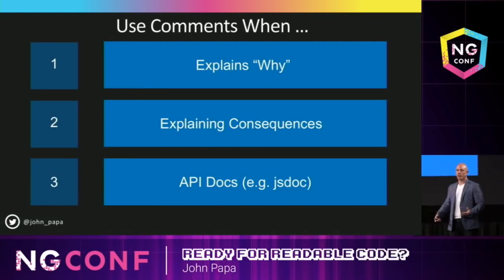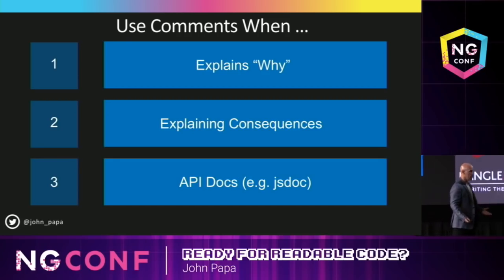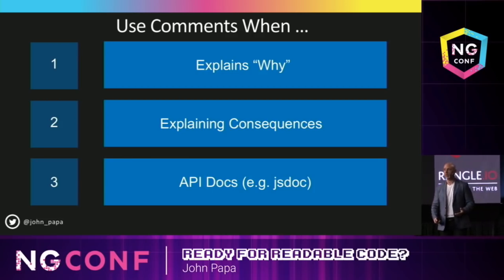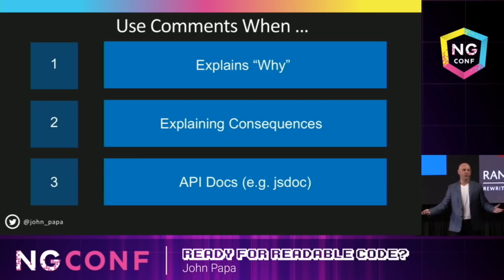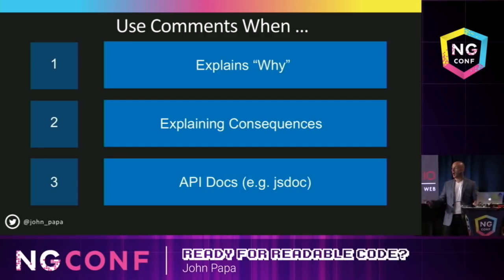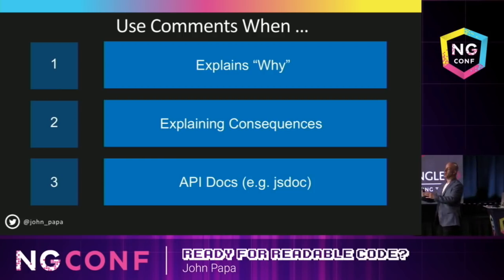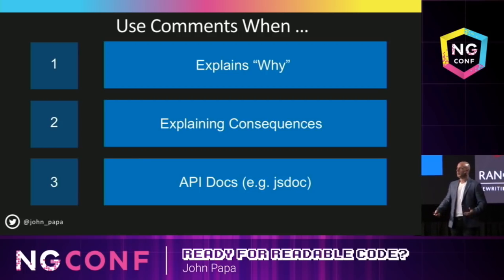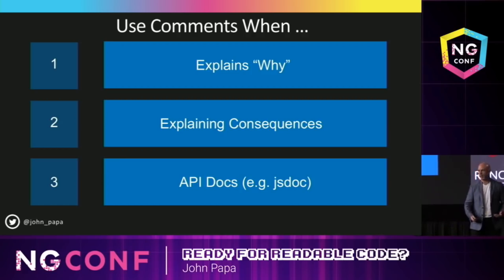So when do you use comments? If it's explaining why something's there, or some kind of unexpected consequence. Or you're doing API docs like with JSDoc — that will clearly help with readable code. There are times to use comments. For example, regex. Who here can actually read a regex that's more than three characters long? You've got a problem, solve it with a regex — now you have two problems. Great place for a comment. I would do a function with the right name, like 'validate email,' and put a comment in there explaining what all those characters do. Comments can be helpful — just think about where you comment and how it can be helpful, and who's going to update it.